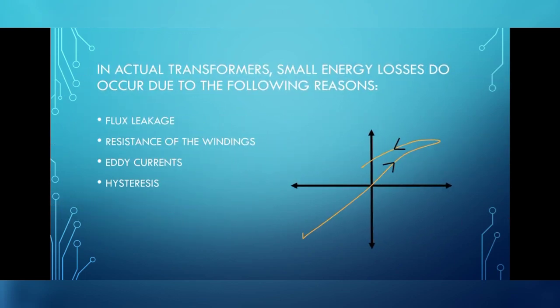No one can be 100% perfect in this world. Similarly, the transformer also has some imperfections such as energy losses. In actual transformer, small energy losses do occur due to the following reasons. Flux leakage: not all the flux in the primary winding gets transferred to the secondary winding. This occurs due to the poor design of the core or the air gap in the core. It can be reduced by winding the primary and secondary coils one over the other.